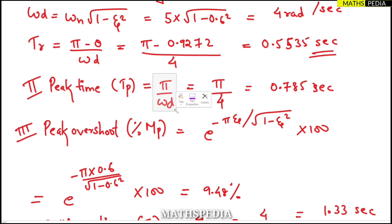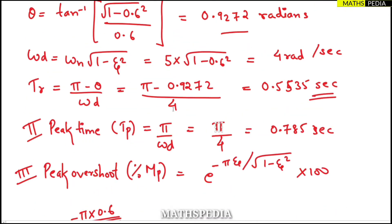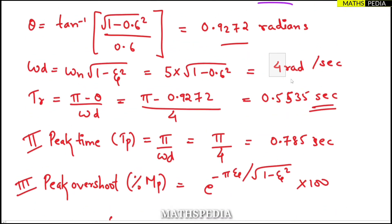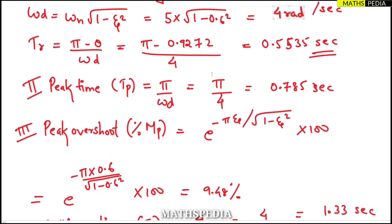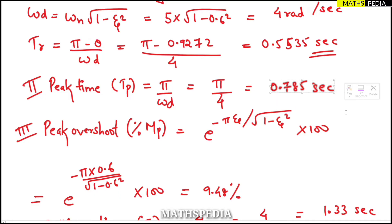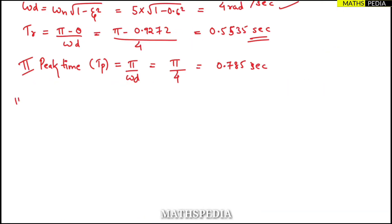Peak time is a very simple formula: t_p = π / omega_d. Substituting omega_d = 4 gives t_p = π/4 = 0.785 seconds. Next is the peak overshoot.